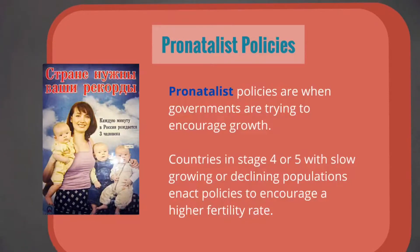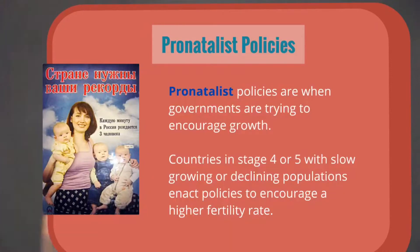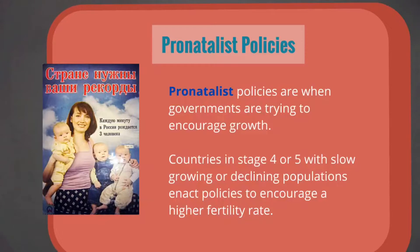Pro-natalist policies are when governments are trying to encourage growth — trying to speed it up. Sometimes governments start to worry that their birth rate is staying very low, their natural increase is very low or zero. Sometimes we even see declining populations, like we talked about in stage five with Japan and Russia. Countries in stage four or five with slow-growing or declining populations sometimes enact policies that encourage a higher fertility rate.